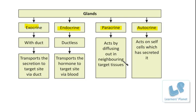All these glands are secretory in nature and therefore they are types of glands. If a gland is secreting out something, then where is it going to function and what is it composed of? So, exocrine gland — as the name suggests, 'exo' means 'outside.' These exocrine glands are actually secreting a particular secretion, some chemicals, and that secretion is further transported to some other site where it is going to function. The secretion is transported through a duct.